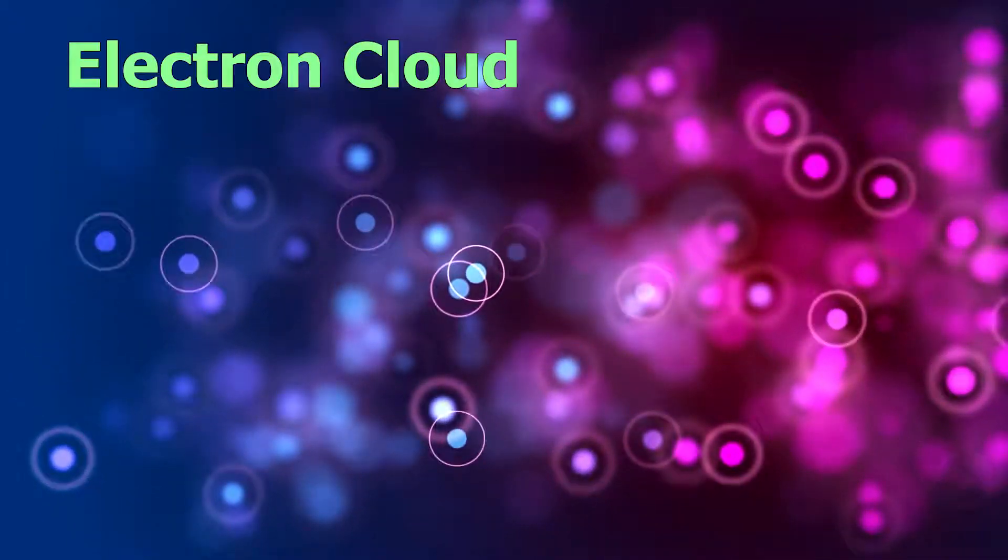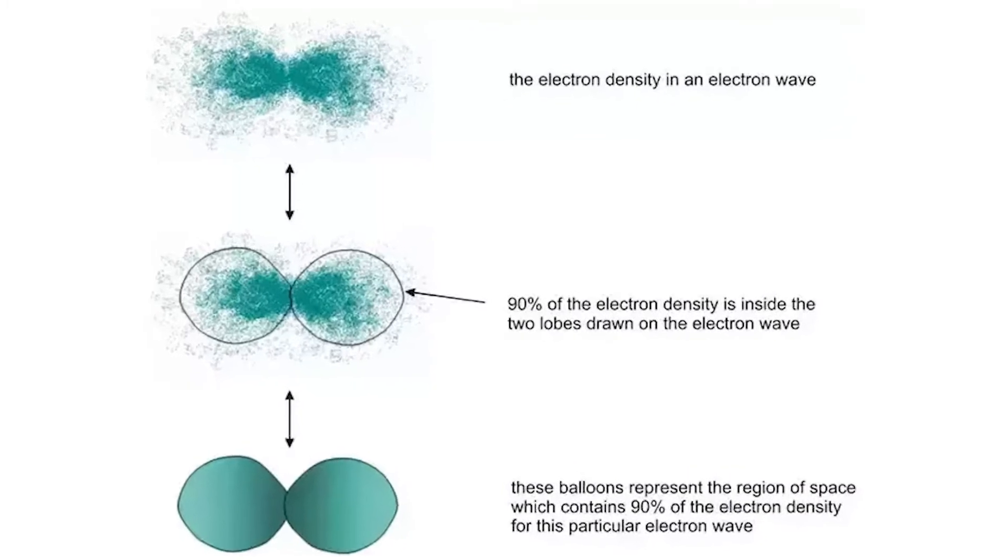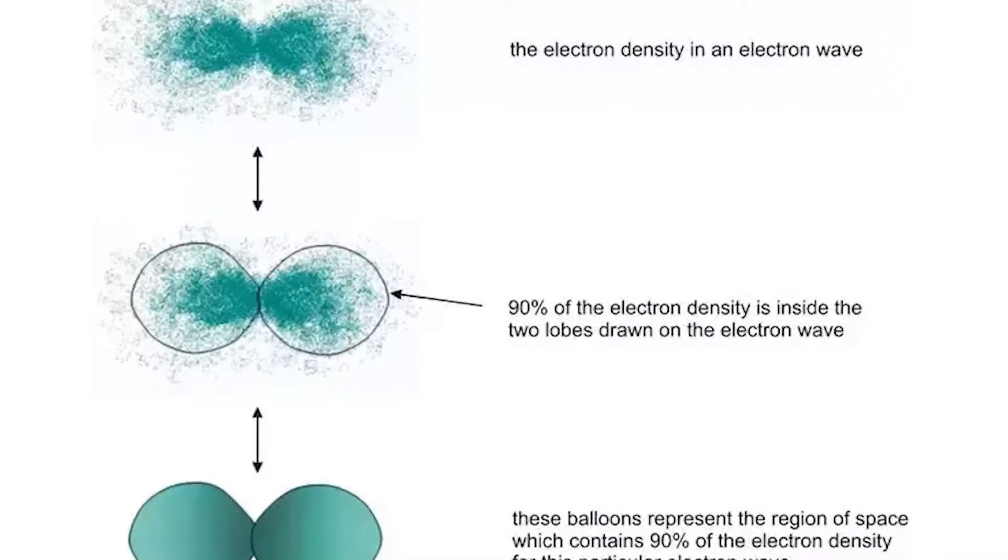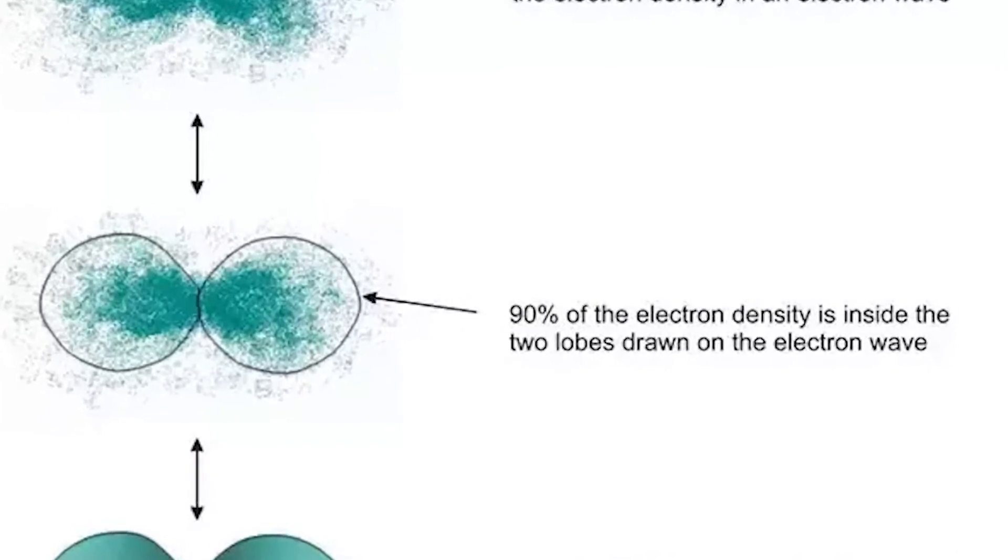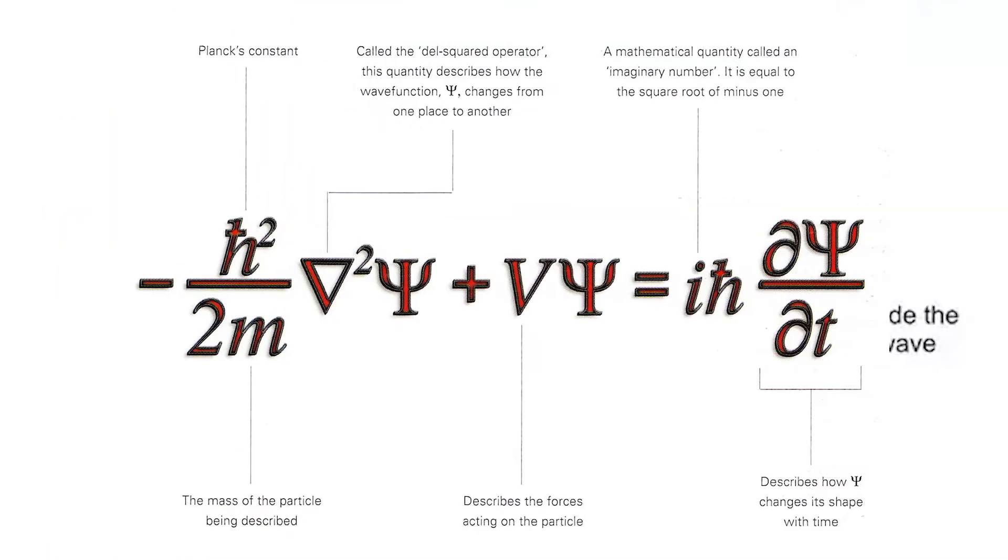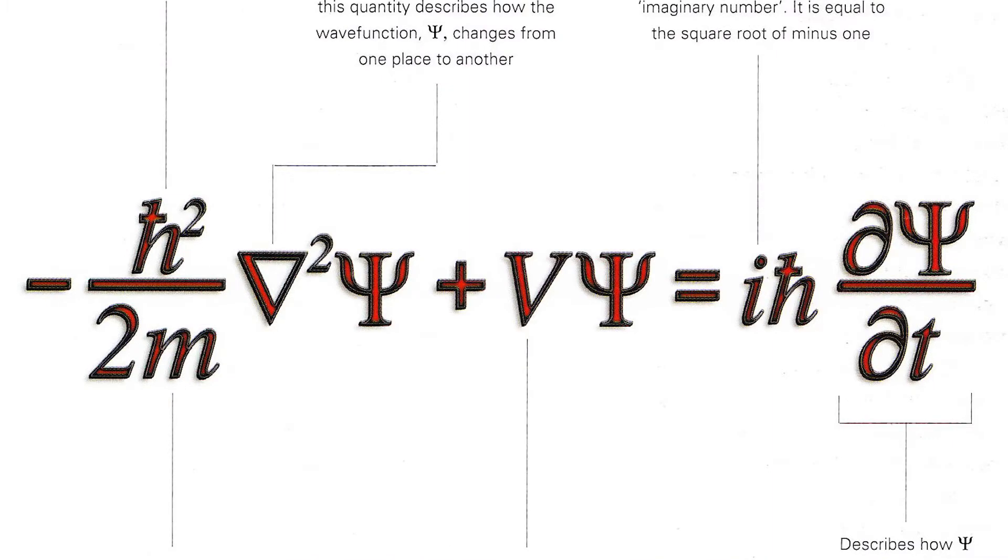The location of the electrons in the quantum mechanical model of the atom is often referred to as an electron cloud. An electron cloud has variable densities, a high density where the electron is most likely to be, and a low density where the electron is least likely to be. This actually comes from the Schrödinger wave equation. The location can only be given as a probability that the electron is somewhere in a certain area.